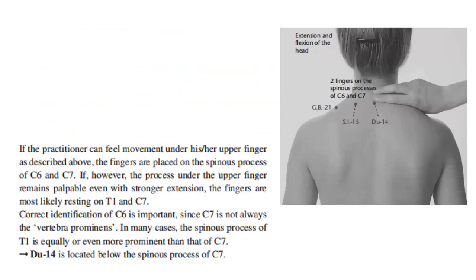If the process under the upper finger remains palpable even with stronger extension, the fingers are most likely resting on T1 and C7. Correct identification of C6 is important, since C7 is not always the vertebra prominens. In many cases, the spinous process of T1 is equally or even more prominent than that of C7. DU14 is located below the spinous process of C7.